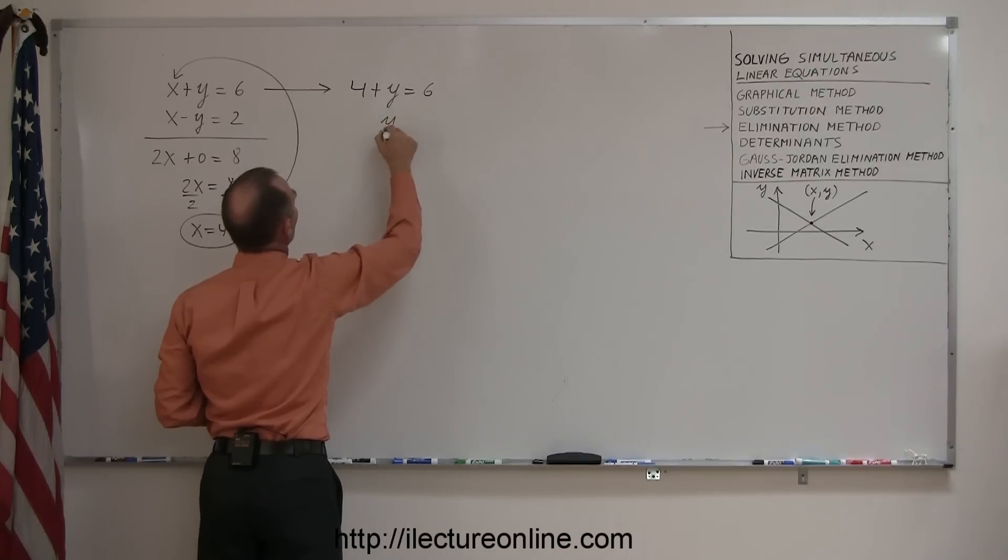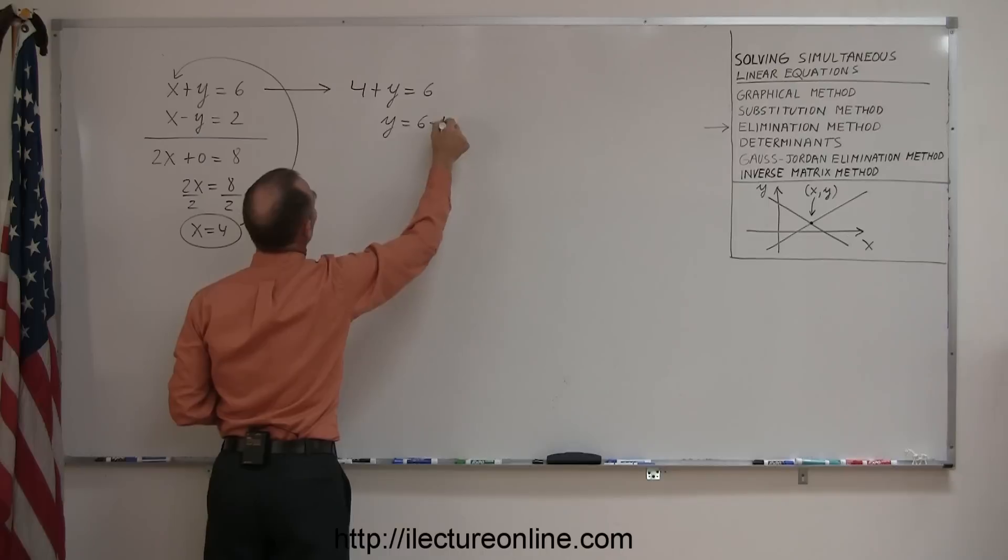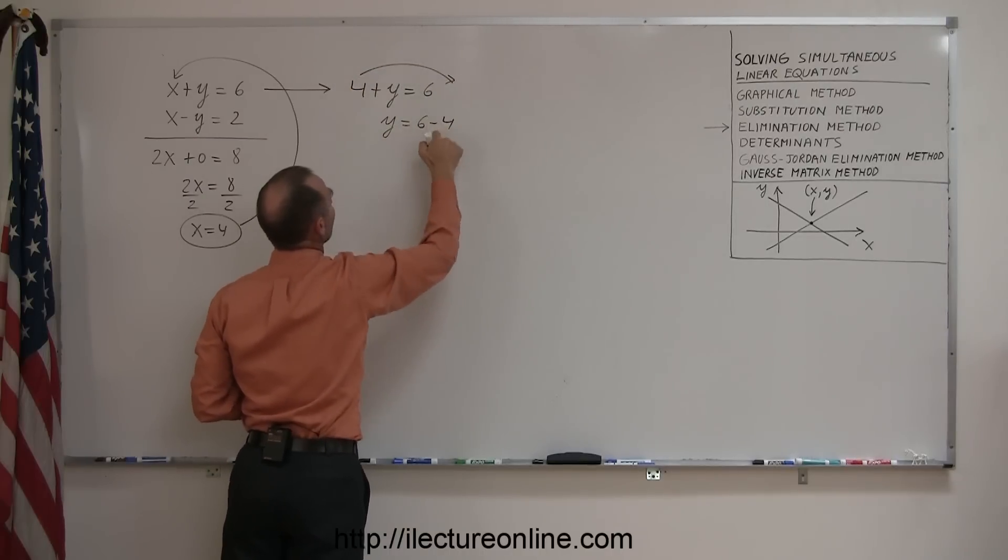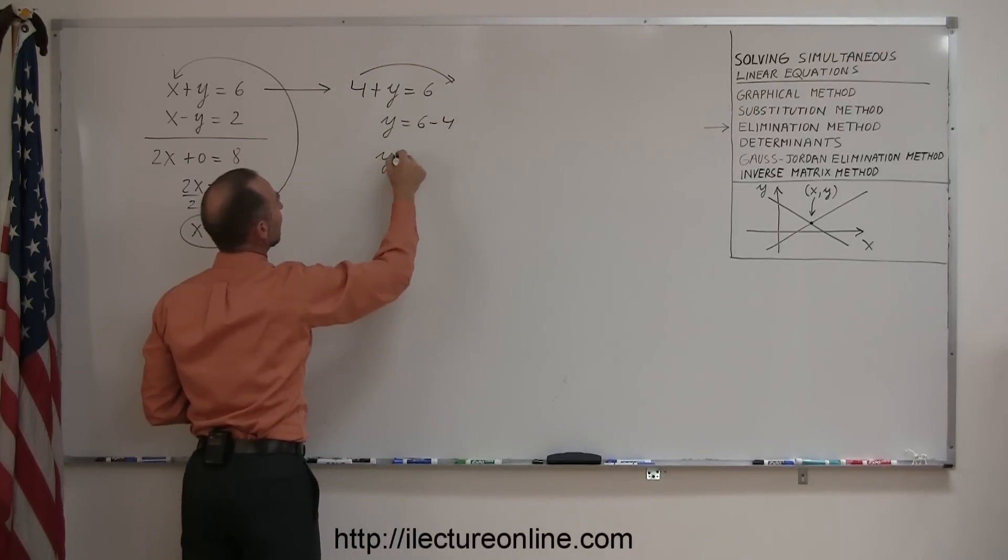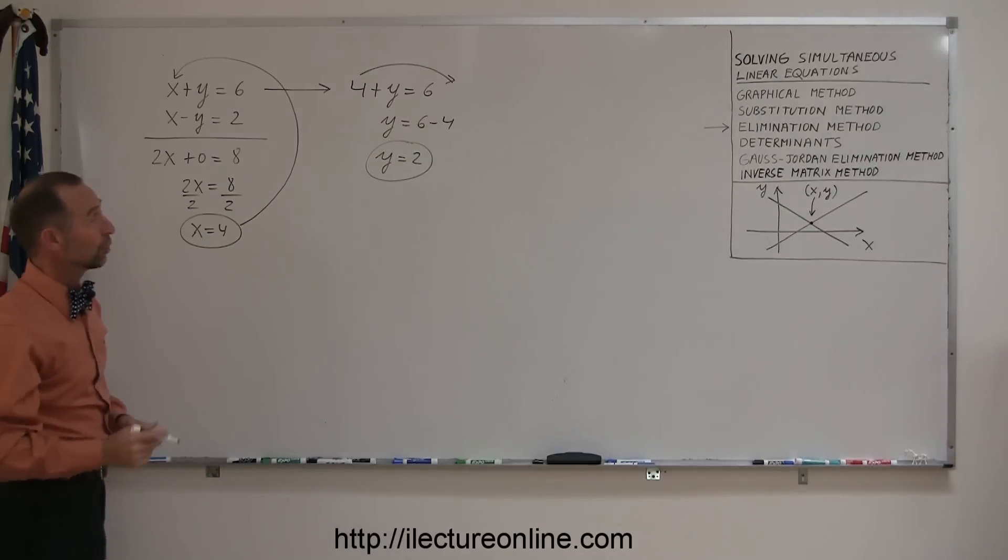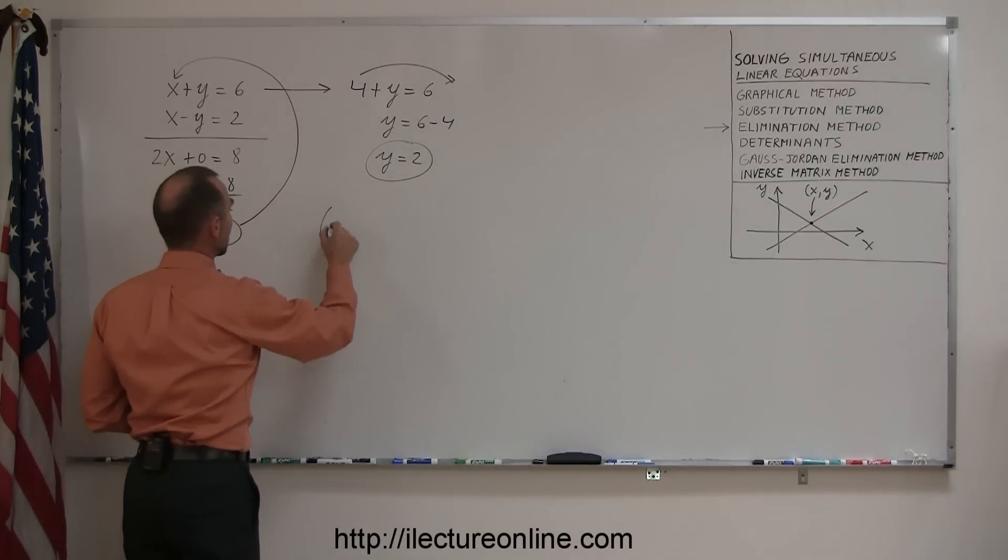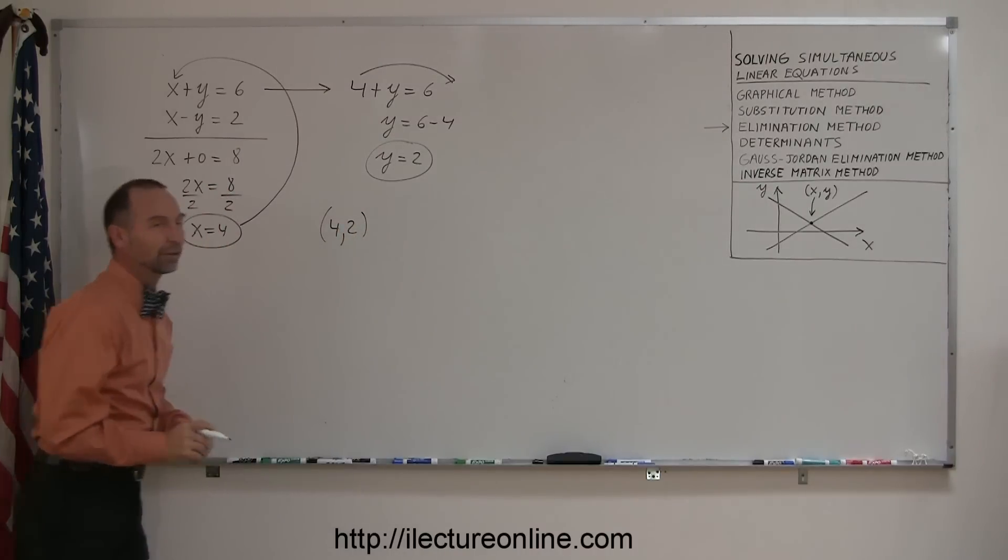Moving the four across, I get y equals six minus four. Remember when you cross the equal sign, the sign changes, so y equals two is the y-coordinate of the point where the two lines cross. So my solution therefore will be four comma two. This is the point where the two lines cross.